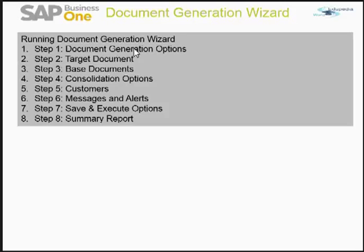You can specify the document type and the characteristics of the target document. You can define the base documents that you want to process, choosing the appropriate document types and other selection criteria. You can also define criteria for consolidating base documents into a target document, and you may choose to create one target document for each base document rather than consolidating.